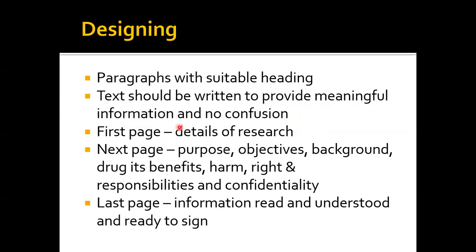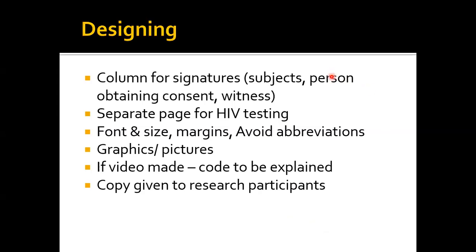The text should provide meaningful information without confusion. The first page of the informed consent document should always contain the details of the research. The next pages should cover the purpose, objectives, background, the drug if used, its benefits, harms, rights and responsibilities, and confidentiality. You must disclose to the participant who will have access to their documents and data. The last page should confirm that the participant has read and understood the study design, purpose, and all pros and cons, and is willing to participate, with a column for signature of both the participant and the person obtaining the consent, and a witness if required.